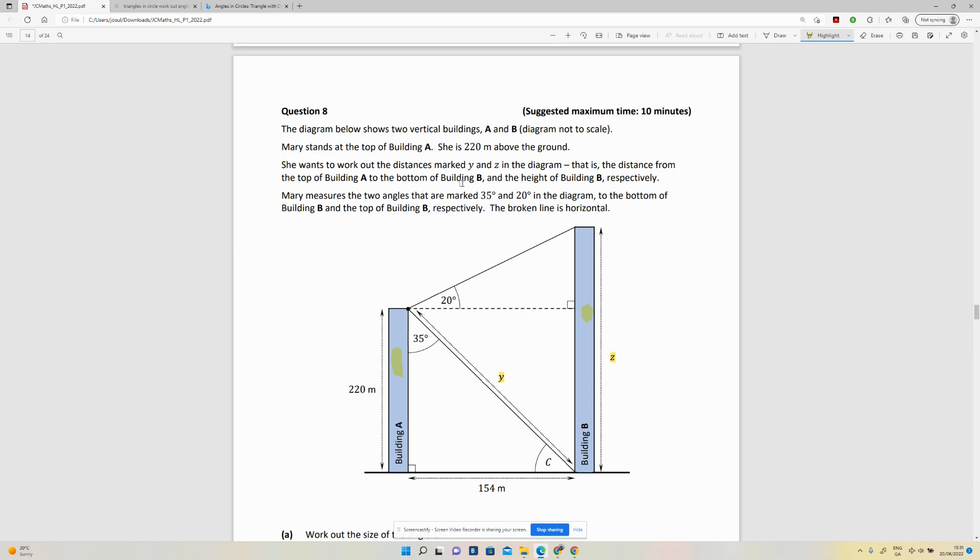And the height of building B respectively. She measures the two angles that are marked 35 and 20 degrees in the diagram to the bottom of building B and the top of building B. The broken line is horizontal, so that means that's the same as what's on the ground. So you've got a right angle there.